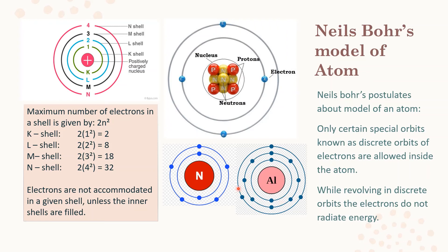If asked to draw a schematic diagram of atomic structure with energy levels and electrons, draw it as shown. For nitrogen (atomic number 7), electronic configuration is 2,5. For aluminium (atomic number 13), electronic configuration is 2,8,3. You can also find the atomic number from the diagram — if there are 4 protons and 4 electrons, the atomic number is 4, which corresponds to beryllium. Its K shell holds 2 and L shell holds 2 electrons.